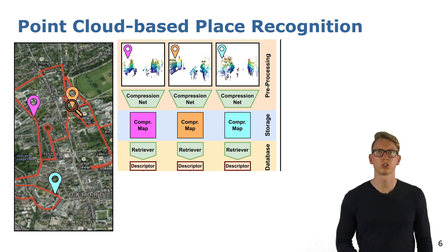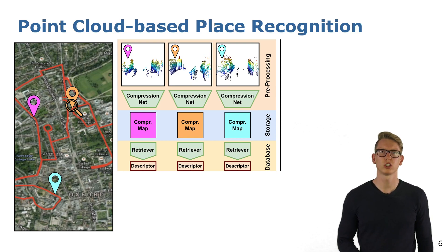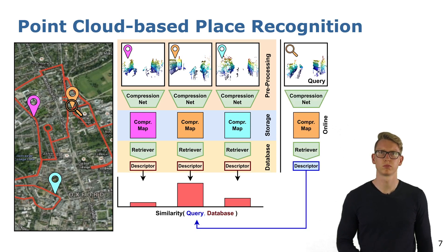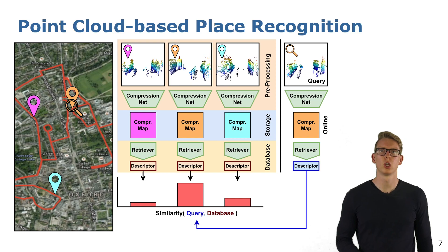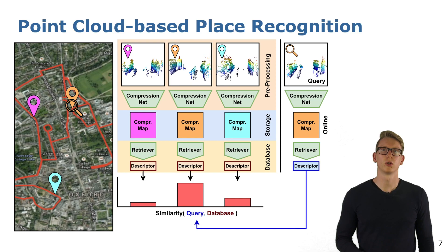For each key pose, we compute one descriptor vector which captures the characteristics of the point cloud. The collection of all descriptors with associated global poses serves as our database. For online operation, we use the same methodology: first compressing the point clouds of the current location, which then serves as input for the retriever to recreate the descriptor. We then compute the similarity between our current query location and the pre-recorded areas in the database at the descriptor level.